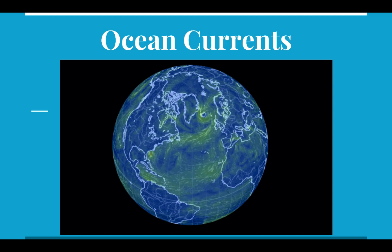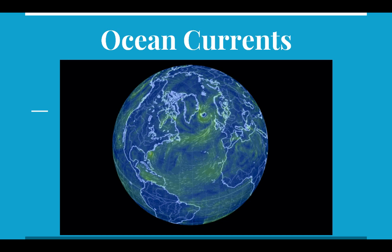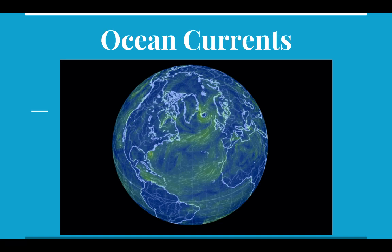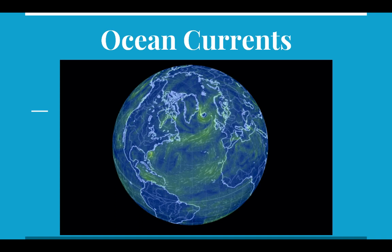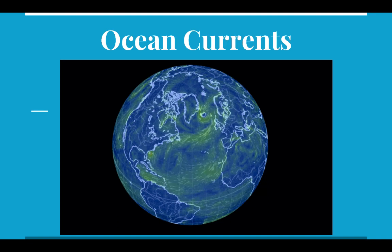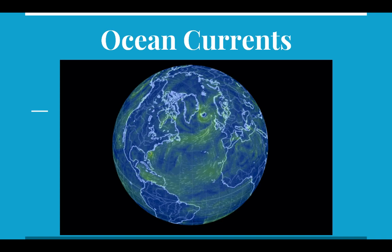Hi everyone, welcome to another AP Environmental Science lecture. Today we're going to look at ocean currents. We've already seen that unequal heating of the earth, together with the Coriolis effect, drive the air currents around the world, and these two phenomena are also going to affect ocean currents. In this lecture we'll look at the circulation of ocean waters both at the surface and in the deep ocean, and how ocean circulation affects the transport of heat around the globe — and how disruptions of these circulation patterns can dramatically alter global climates.